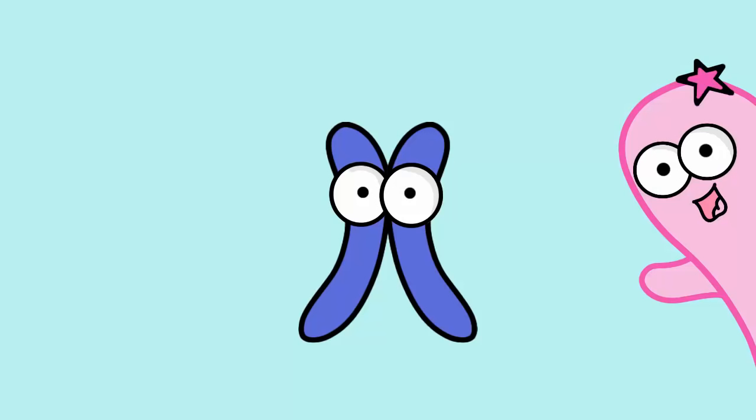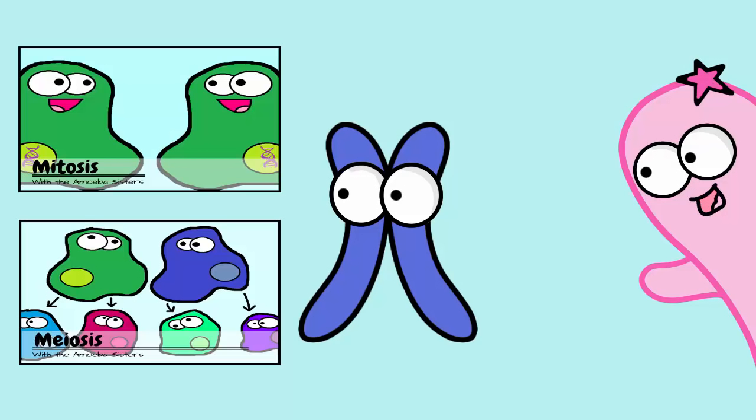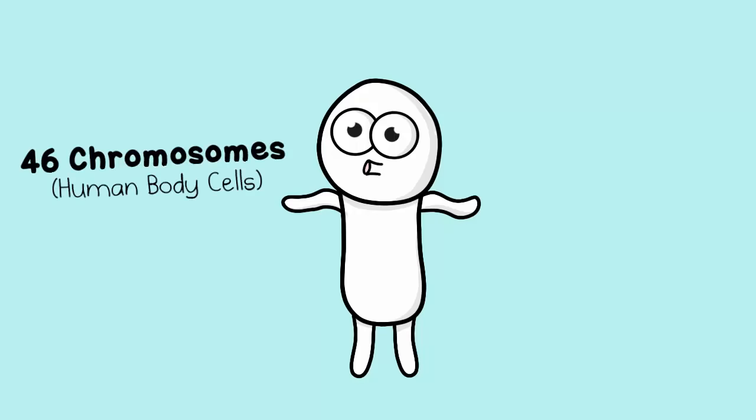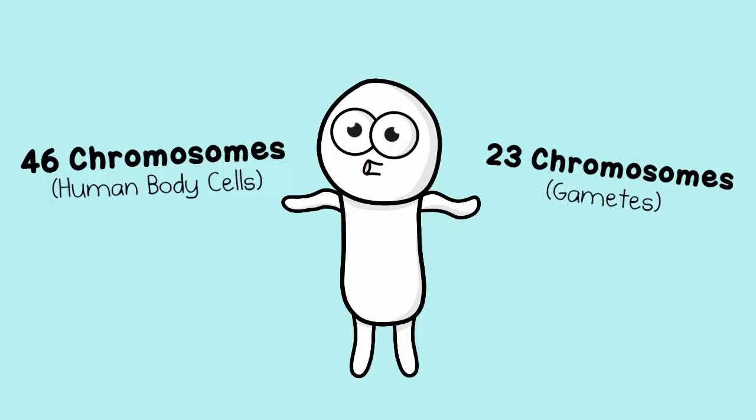This video is going to explain the chromosome numbers in these processes, but please watch our mitosis and meiosis video first so that you can understand the actual process first. Our video is talking about chromosome numbers in human cells, so please assume that for the entire video. Just a reminder: human body cells have 46 chromosomes, and human sex cells, also called gametes, have 23 chromosomes.